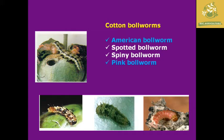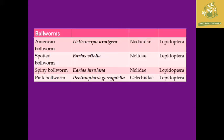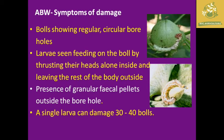The list of boll worms present in cotton includes: American boll worm, spotted boll worm, spiny boll worm, and pink boll worm. Their common names, scientific names, family, and order are given in the table. First, we will see about the American boll worm.